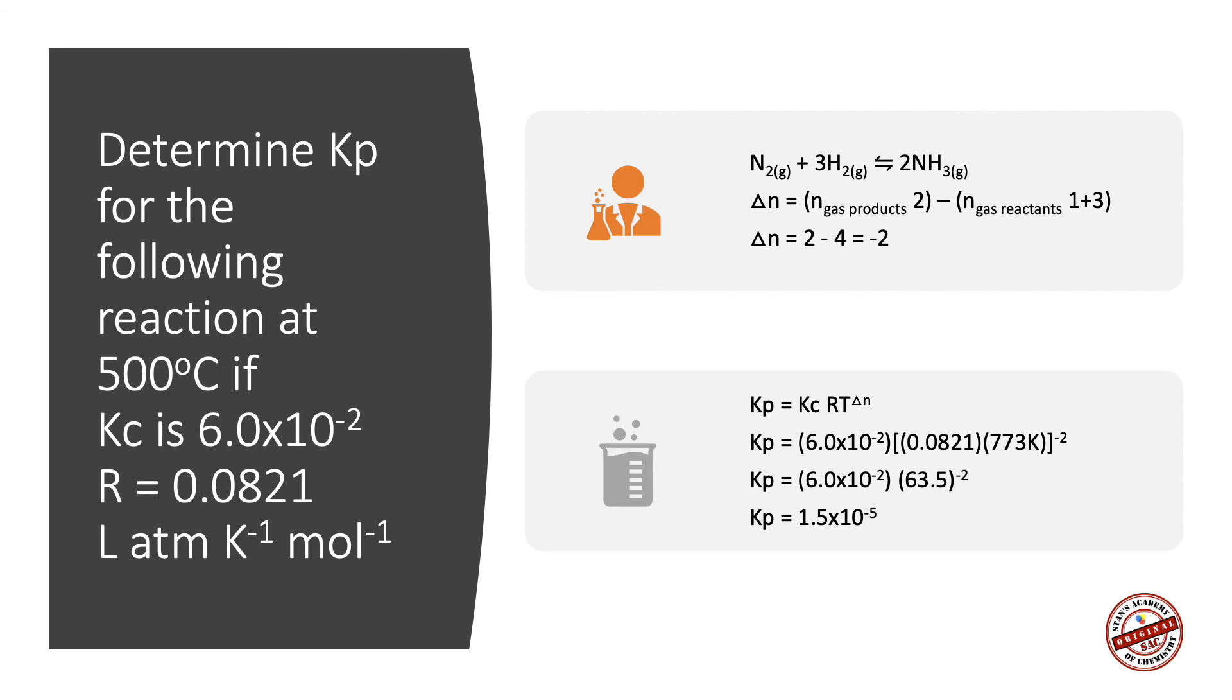Substituting the value in the equation Kp equals Kc times RT raised to delta N. Kp equals 6.0 times 10 to the power of negative 2 times 0.0821 times 773 Kelvin, the whole raised to negative 2, where Kp equals 1.5 times 10 to the power of negative 5. So now we have converted Kc, which is 6.0 times 10 to the power of negative 2, to Kp, which is 1.5 times 10 to the power of negative 5.